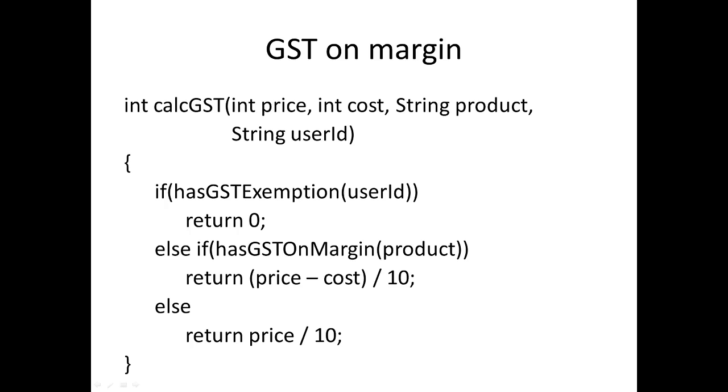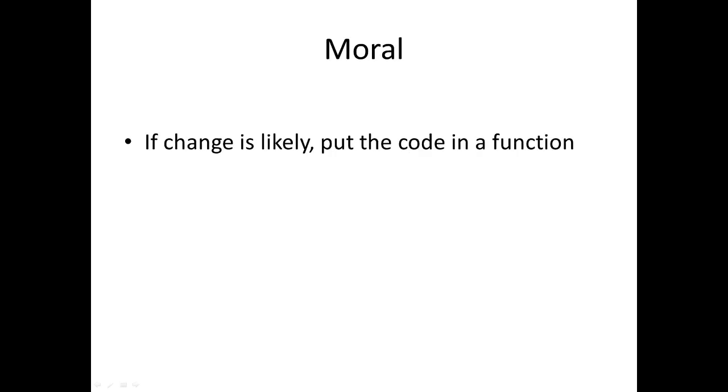But what's happened through all this is we've centralized always what has to be done. So the moral of the story is if you think change is likely in the future, then you should always centralize that code in a function and then use that function everywhere. Then maintenance will be a lot easier.